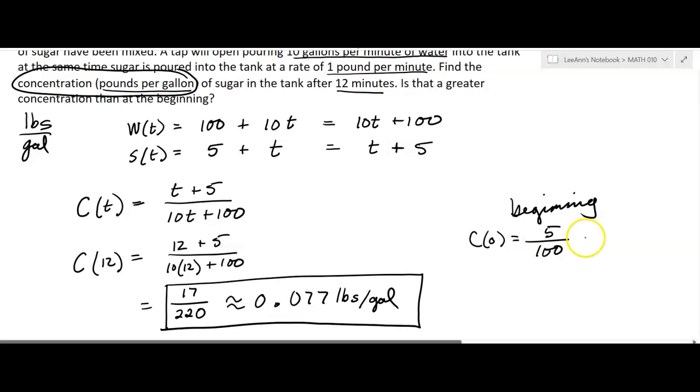But you're going to get 5 over 100, which is going to be 0.05. So it looks like the concentration is more now. So greater concentration of sugar after 12 minutes.